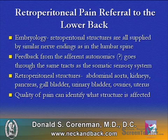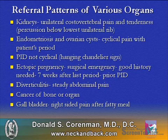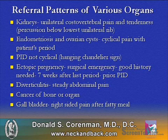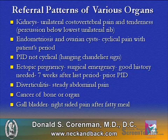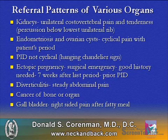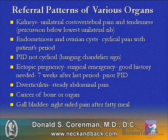The quality of pain can very commonly be identified by what structure is affected. Kidneys normally will cause a unilateral costovertebral pain and tenderness. If you percuss the area right below the lowest unilateral rib, you can get significant reproduction of pain. Endometriosis and ovarian cysts are cyclical pain associated with the patient's period. Pelvic inflammatory diseases are not cyclical — there is something called the hanging chandelier sign, where the cervix is so tender that the patient has severe pain with any palpation. Ectopic pregnancy is a surgical emergency, typically occurring around seven weeks after the last period, and the patient should have a prior pelvic inflammatory disease causing scarring of the fallopian tubes.